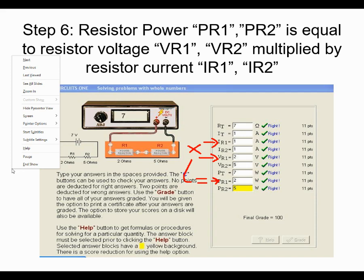In a series circuit, a couple of things to know: the voltage across the resistors adds up to the total — they will always add. In this case, you've got 2 volts across the first resistor, 5 across the second, and they add to 7, which is what is powering the circuit. The other thing that is additive in a series circuit is the power — the power values across the resistors will always add up to the total power.